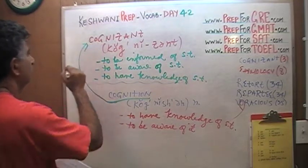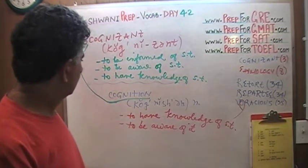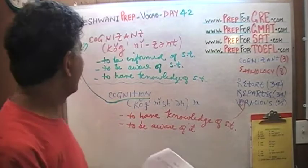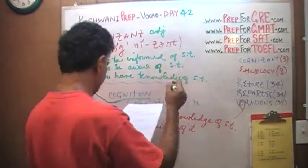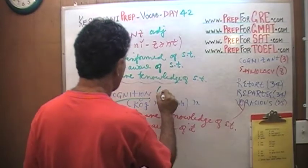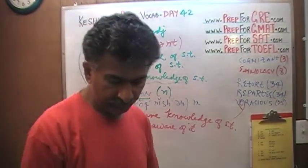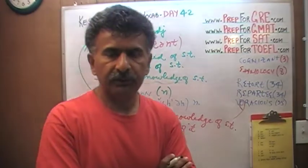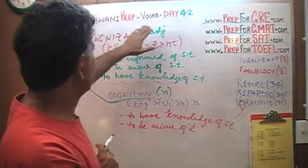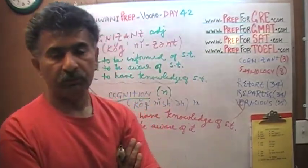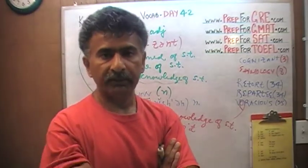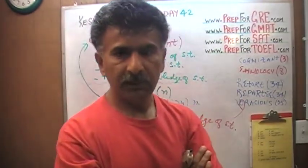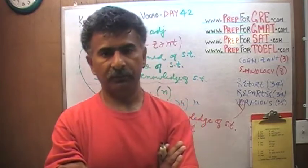Cognition is the noun, and from the word cognition we get cognizant, which is an adjective. If you're cognizant of something, you're aware of it, you know it very well. I used this word in yesterday's video — on day number 40 or 41 — when I said I'm cognizant of the fact that I have an accent, and because I'm a non-native speaker I mispronounce some words. I'm cognizant of it, I'm fully aware of it.